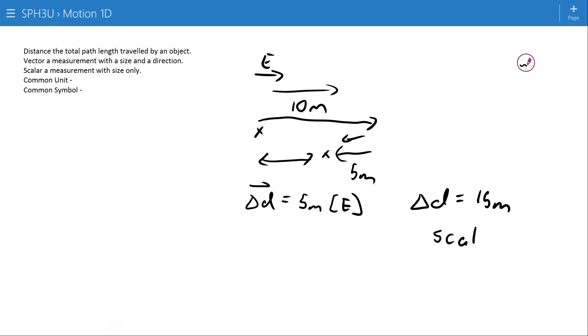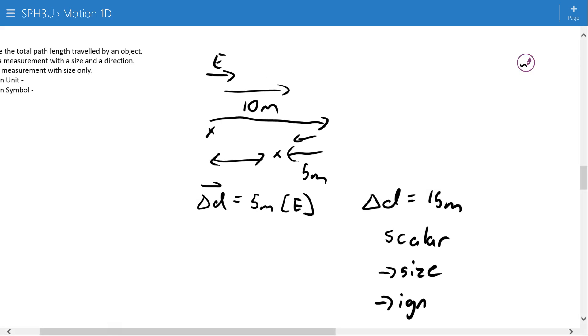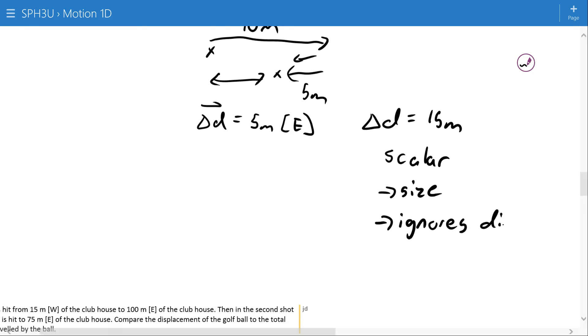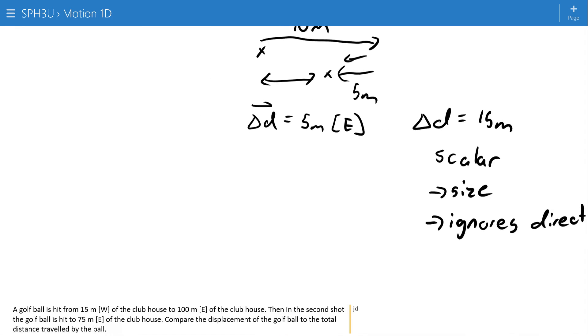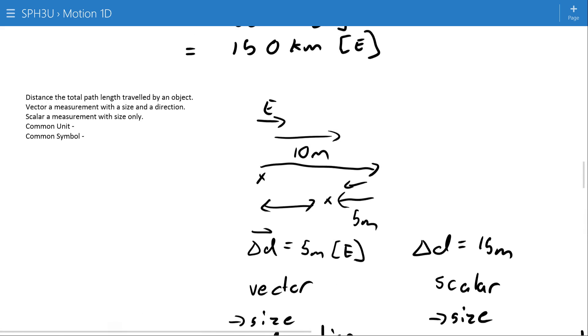Distance is a scalar in that it has size but ignores direction, and displacement is a vector in that it has size and direction. Most commonly distance we've measured in meters although we're going to see situations where we leave it in kilometers. And the common symbol here is delta D and you're going to notice the lack of arrow on top which is our notation for saying that it is a scalar not a vector.